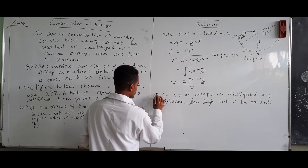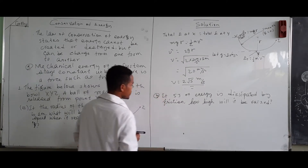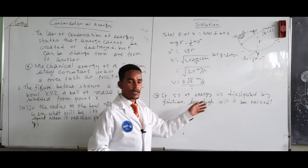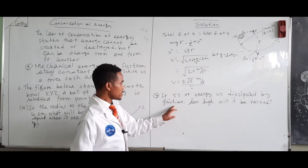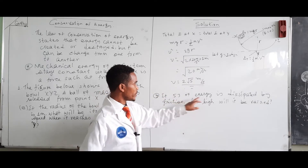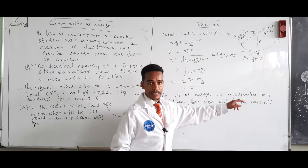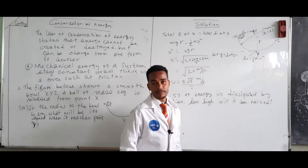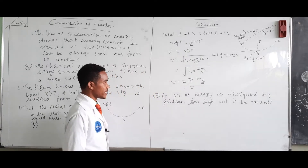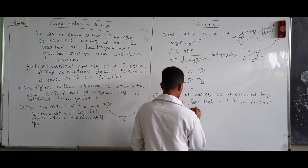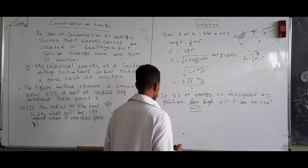Question B from the same problem: if 5 joules of energy is dissipated because of friction, how high will the ball be raised? This is the second question from the same problem.